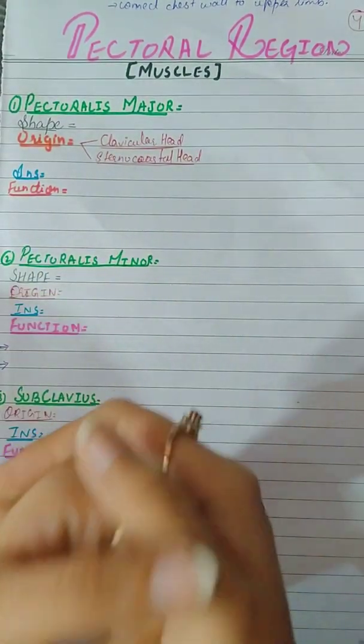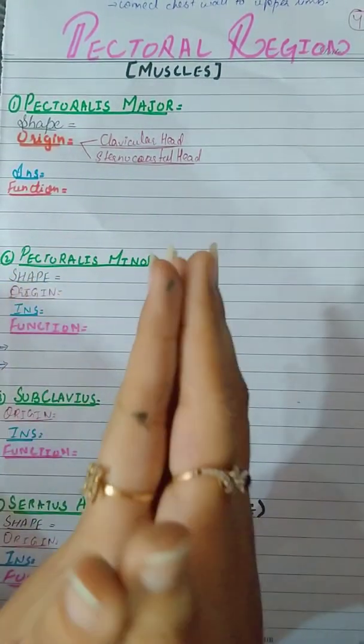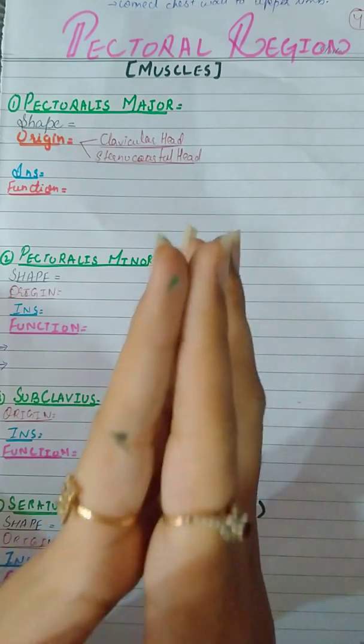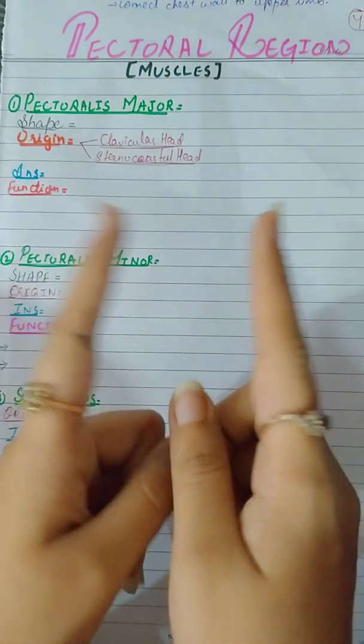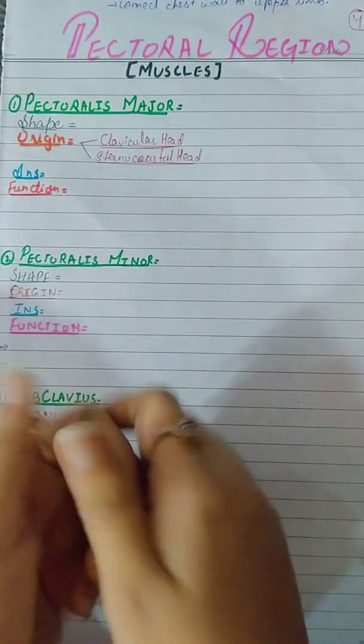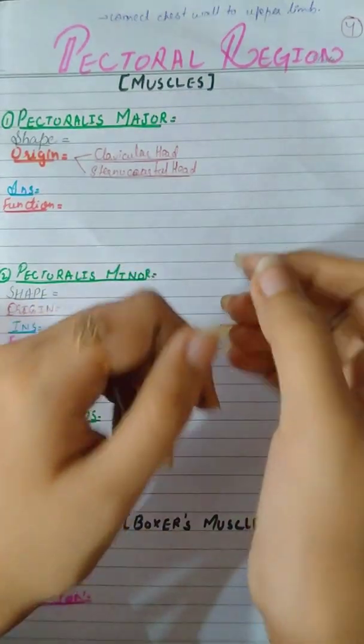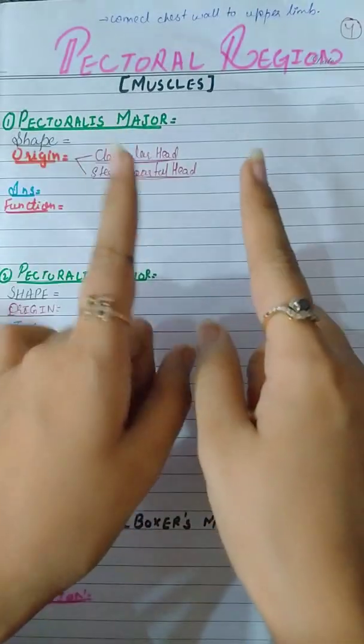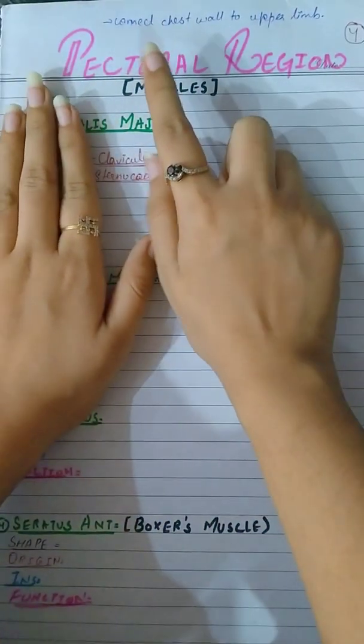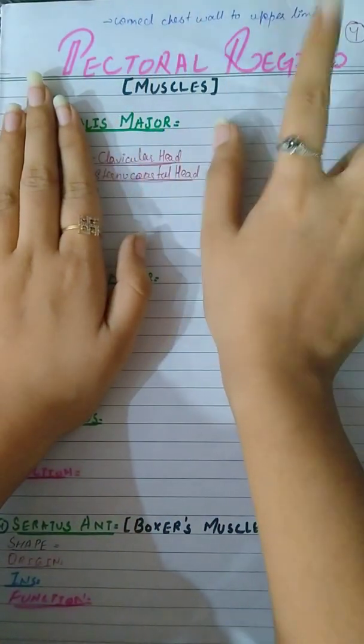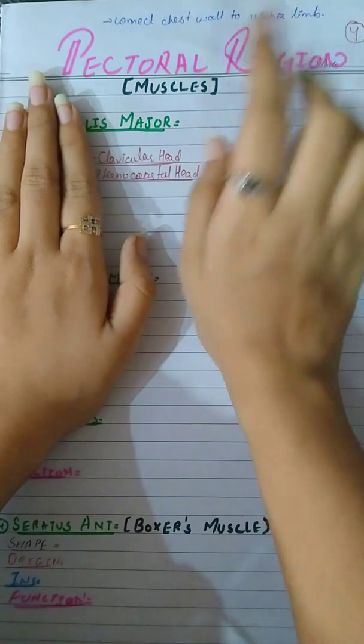Hello guys, welcome back to my channel. In this video we will learn about the pectoral region muscles. These muscles basically connect the chest wall to the upper limb. There are basically four muscles.